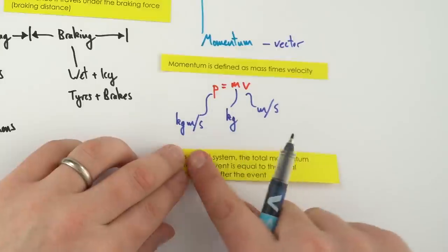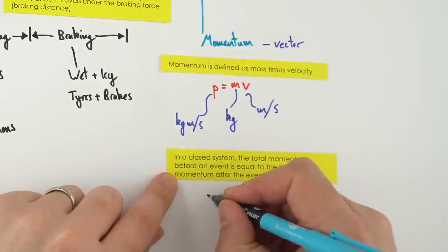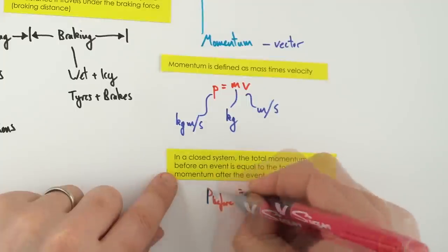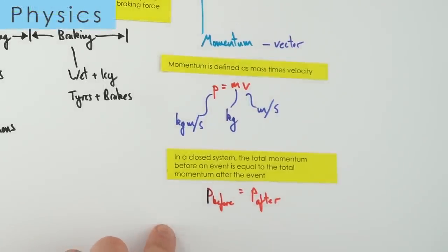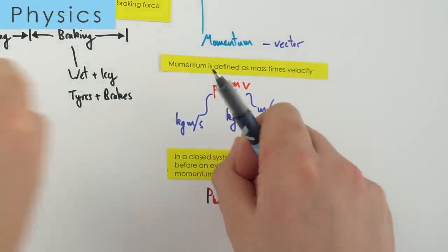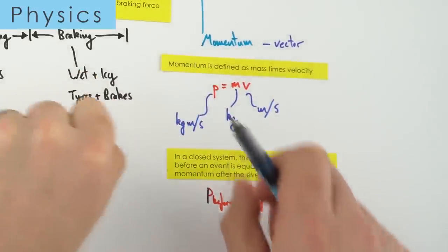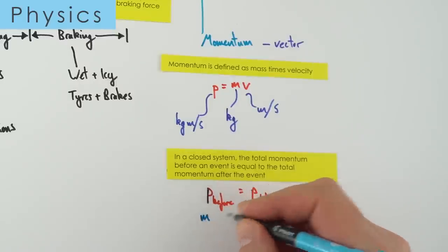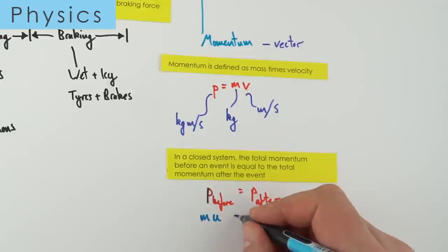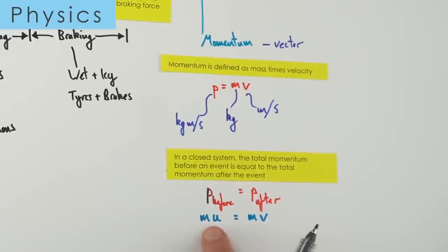In a closed system, the total momentum before an event equals the total momentum afterwards — conservation of momentum. For example, if a moving object hits a stationary one and they move off together, the initial momentum (mass × initial velocity) equals the combined final momentum (total mass × combined final velocity). It's worth practising calculations on this.